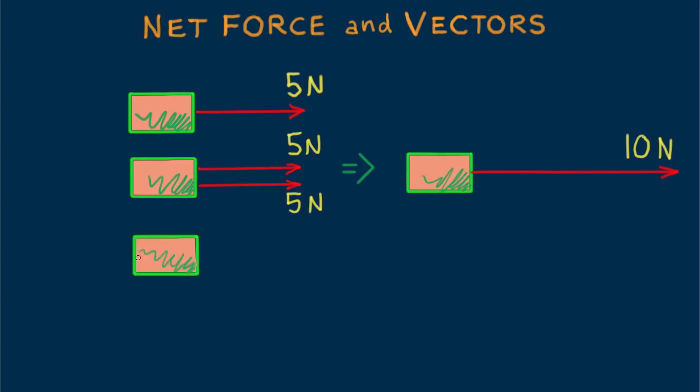Suppose we pull on the box with two oppositely directed forces. One 10 Newtons to the right, and the other 5 Newtons to the left. How does the box move? Here forces subtract, and it moves just as if a single 5 Newton force acts on it. The net force on the box is 5 Newtons to the right.